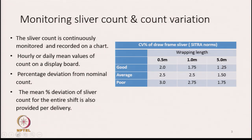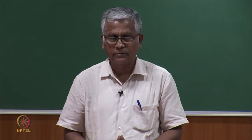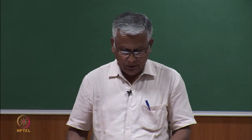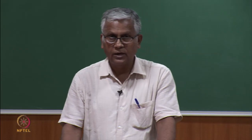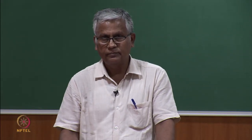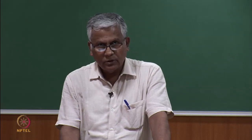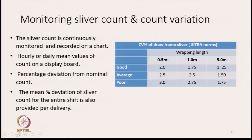The first thing is monitoring of sliver count and count variations. There are inbuilt sensors within the machine which will continuously check the count of the sliver. At the same time, it will also make sure that the count variation remains within a certain limit. In case it goes outside the limit, the machine will be stopped automatically. Count is continuously monitored and the data is recorded on a chart. Hourly or daily mean values of the count will be displayed on a display board.